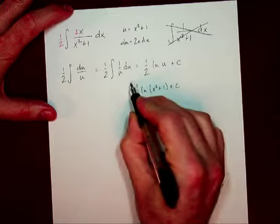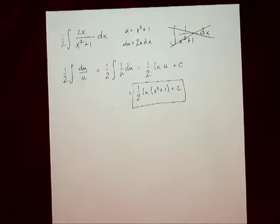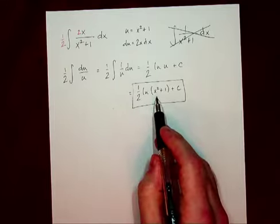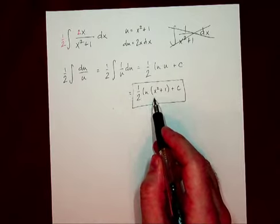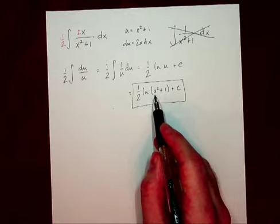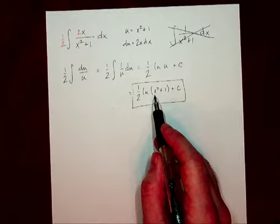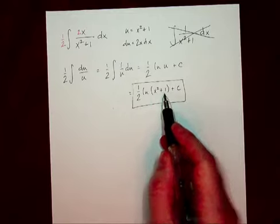Now, remember, when we integrate using natural log, we need to be ready to put the absolute value bars around the argument of the logarithm. The reason that there are no absolute value bars here is the fact that x squared plus 1 can never be negative. It can never be 0 because x squared is non-negative, and non-negative plus 1 is always positive.